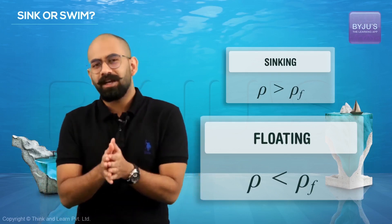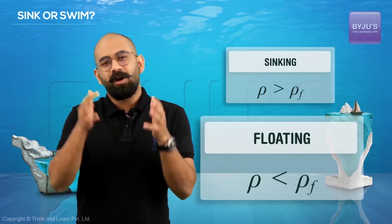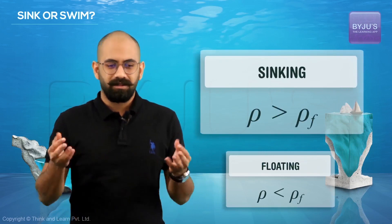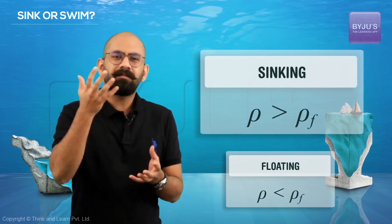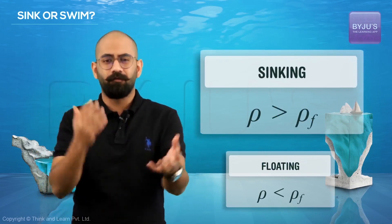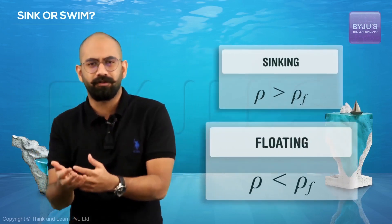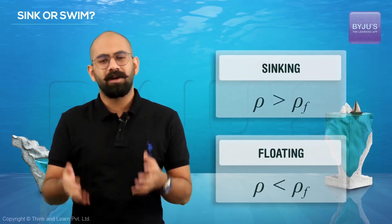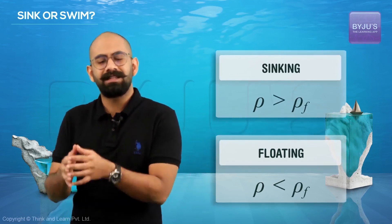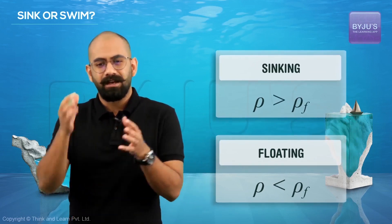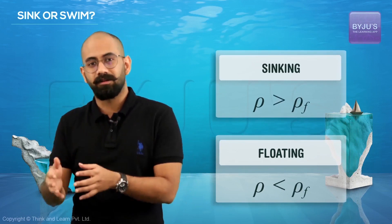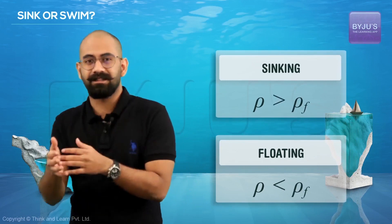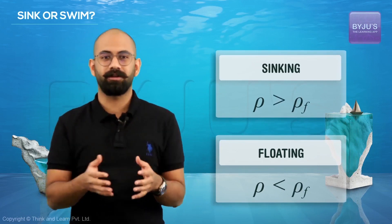This is why a small piece of iron sinks in water but a heavy piece of wood can float in water — it does not depend on mass, it depends on density. Iron is denser than water, whereas wood is less dense than water.